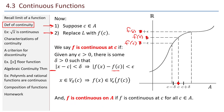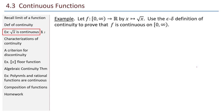F is continuous on the entire set A if F is continuous at C for all C in A. Let F be a function from the non-negative real numbers to the real numbers given by the mapping X maps to the square root of X. We'll use the epsilon-delta definition of continuity to prove that F is continuous on the non-negative real numbers.